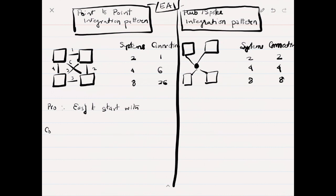The pro of point-to-point integration system is it's easy to start with. As we add more systems, we need more connections in point-to-point. What is the drawback of hub-and-spoke? Initial investment is huge. What is the pro? As we need more systems, we need fewer connections compared to point-to-point system in the hub-and-spoke.